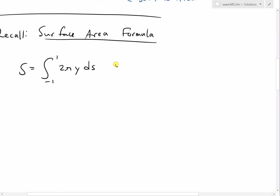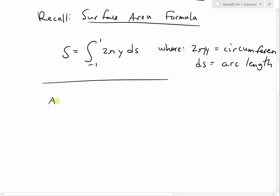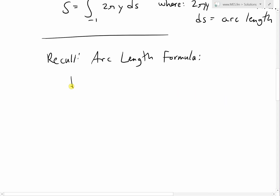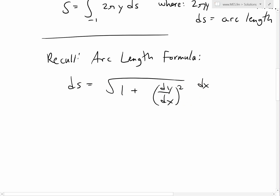So, 2πy is the circumference of the circle, and dS is the arc length. Recalling the arc length formula: dS equals the square root of (1 plus (dy/dx) squared) dx. Before plugging everything into the surface area formula, let's simplify by working this out.